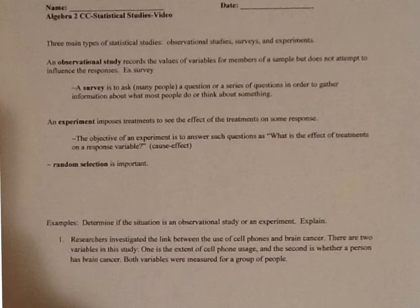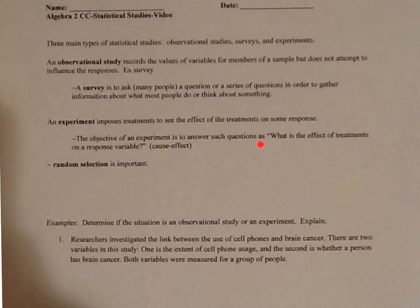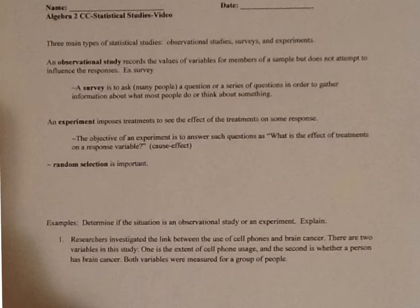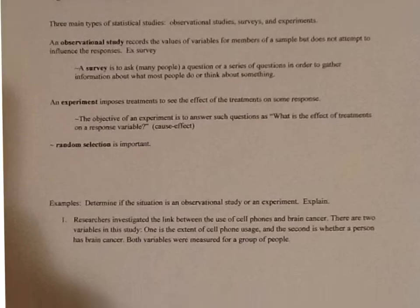Another type of study is an experiment. An experiment imposes treatments to see the effect of the treatments on some response. The object of an experiment is to answer such questions as: what is the effect of treatments on a response variable? This is a cause-and-effect relationship — if I do this, will this happen, or if I give somebody this, will this happen? An important part of an experiment is random selection. Let's take a look at the examples.